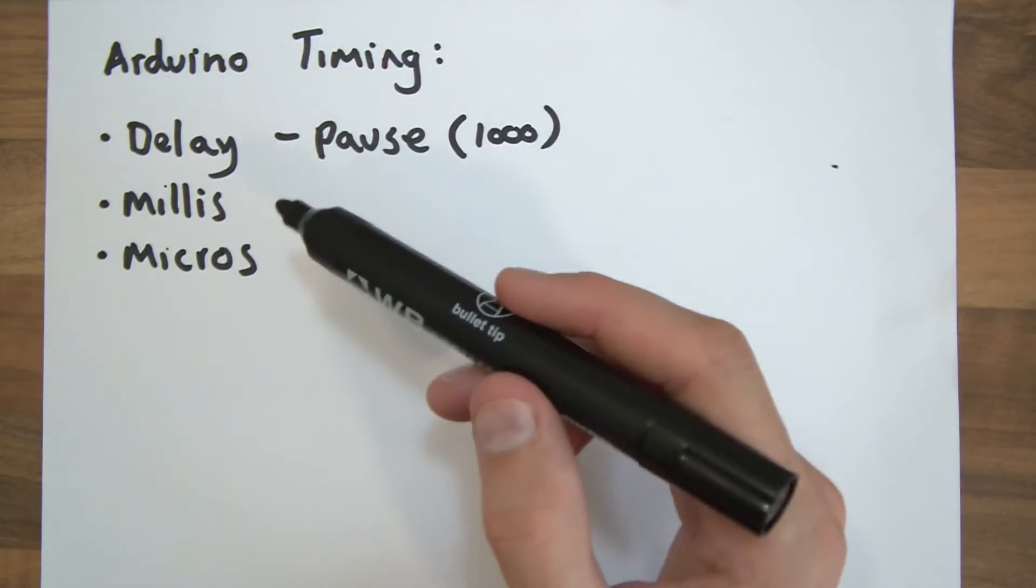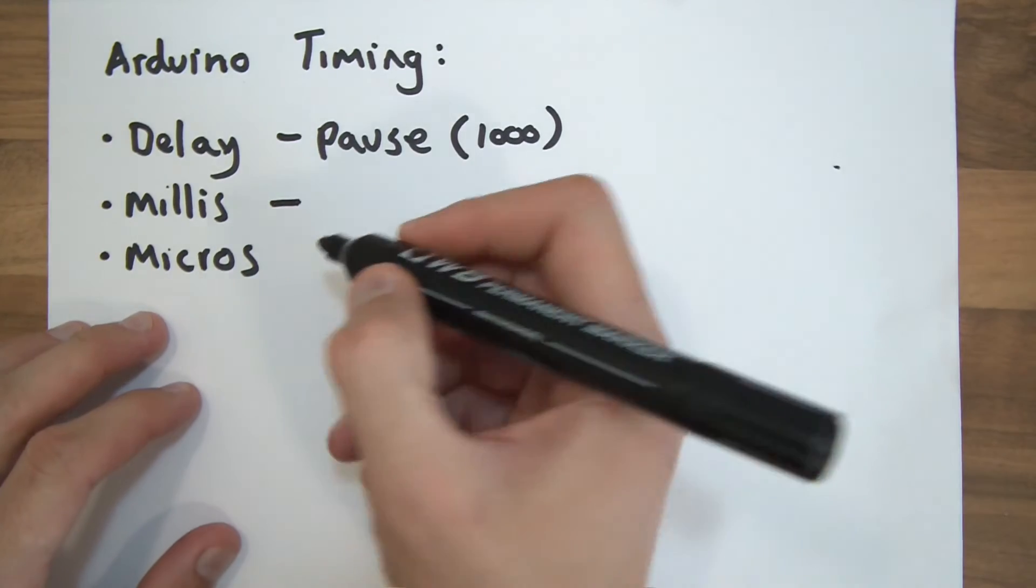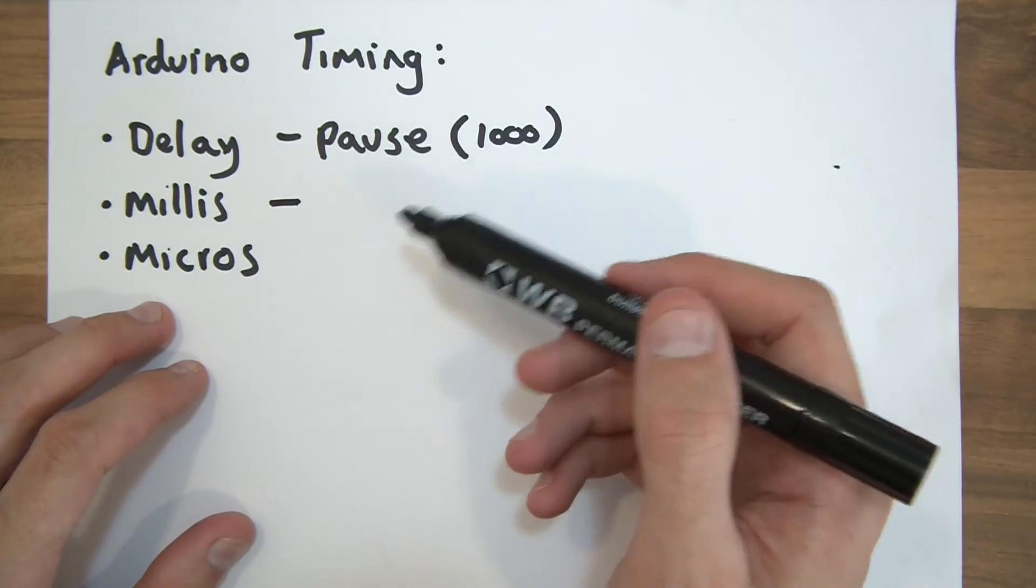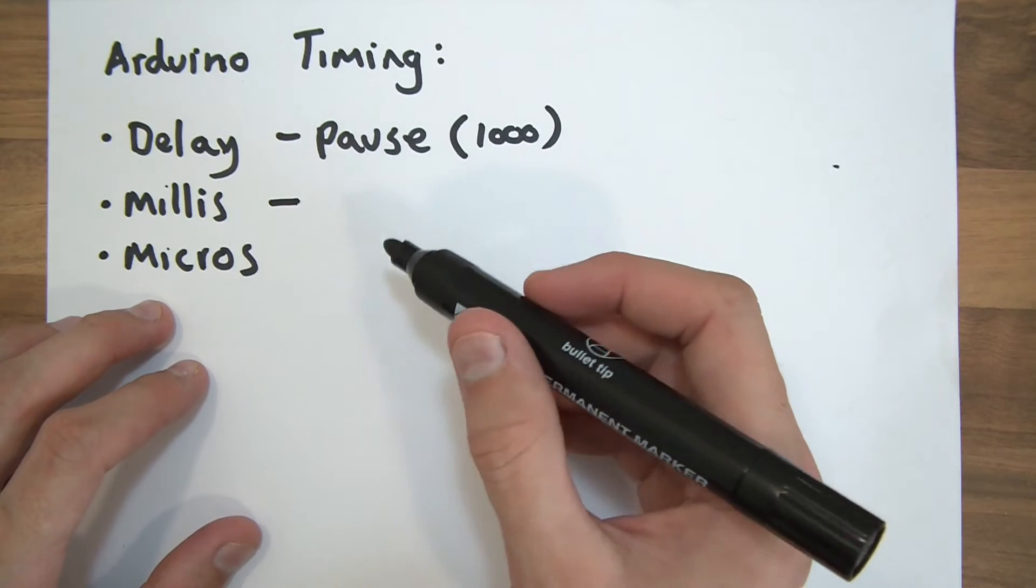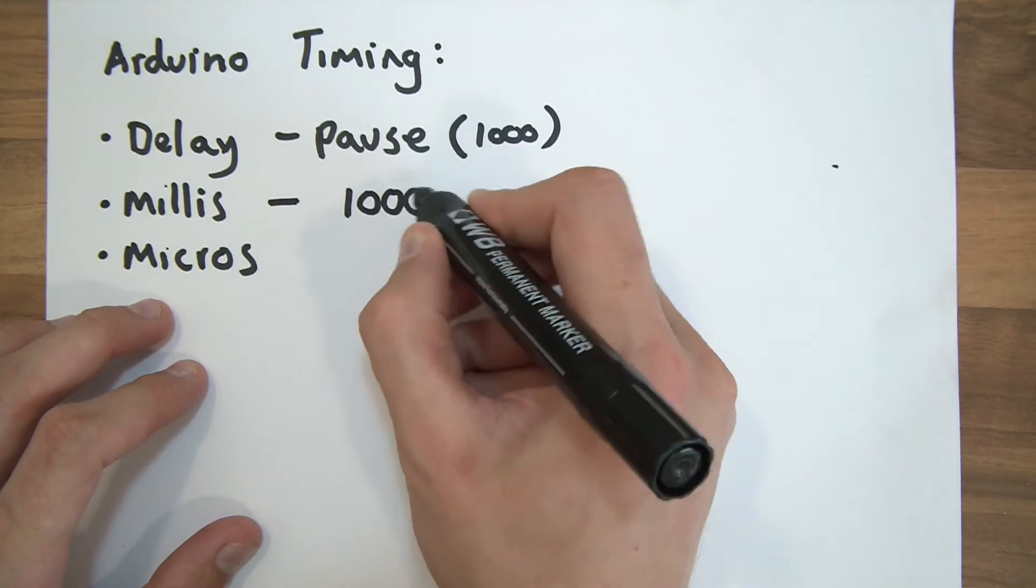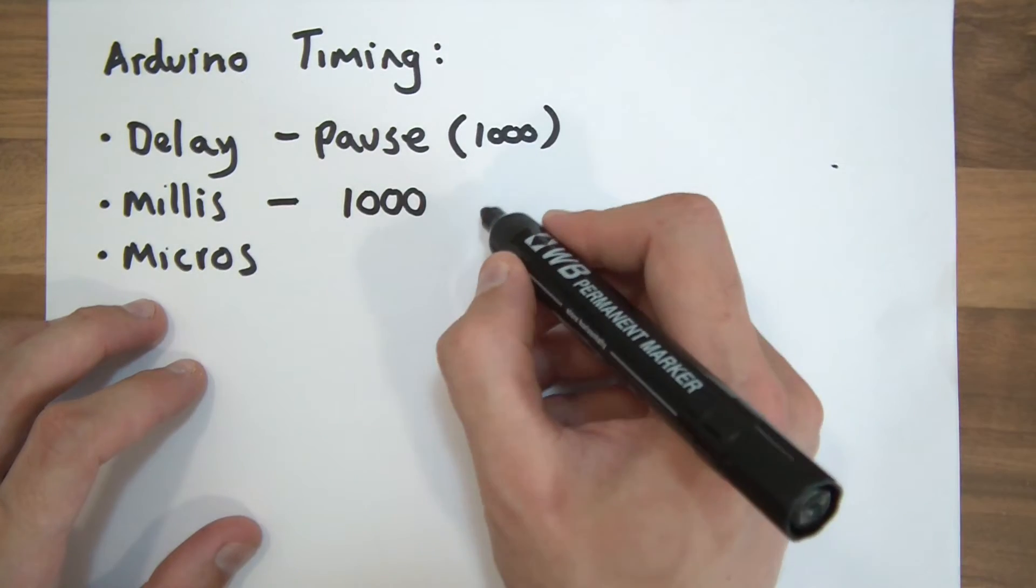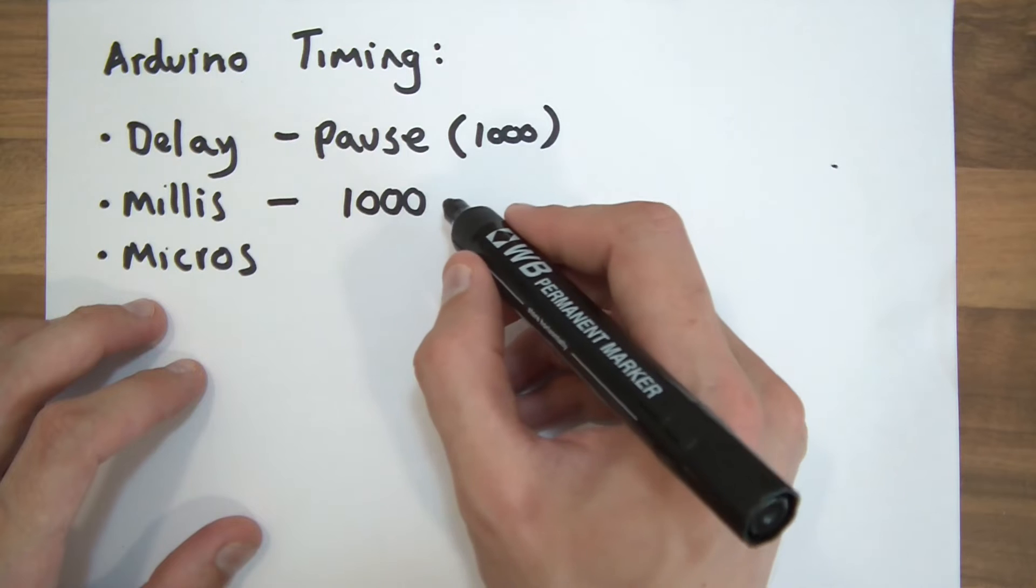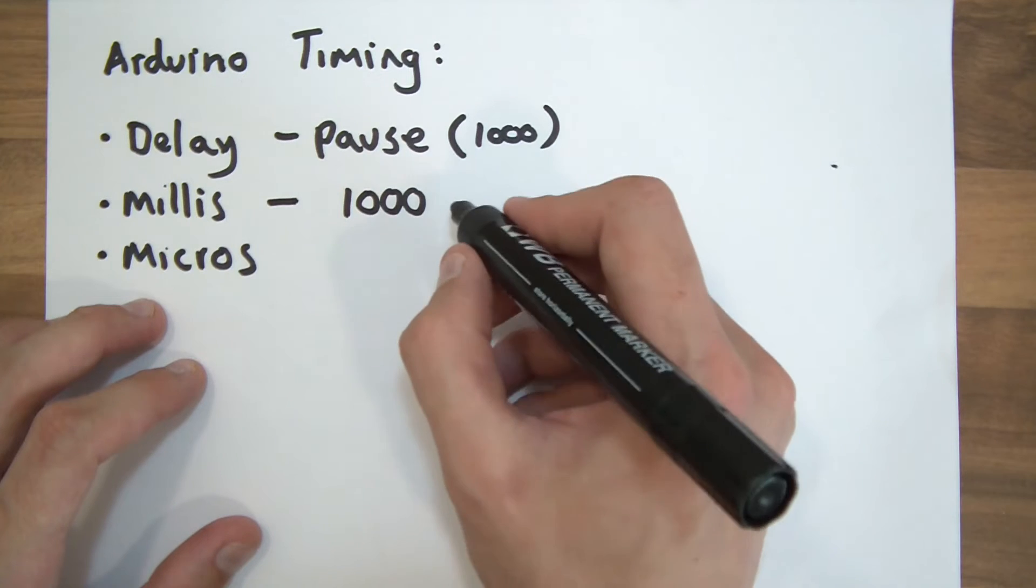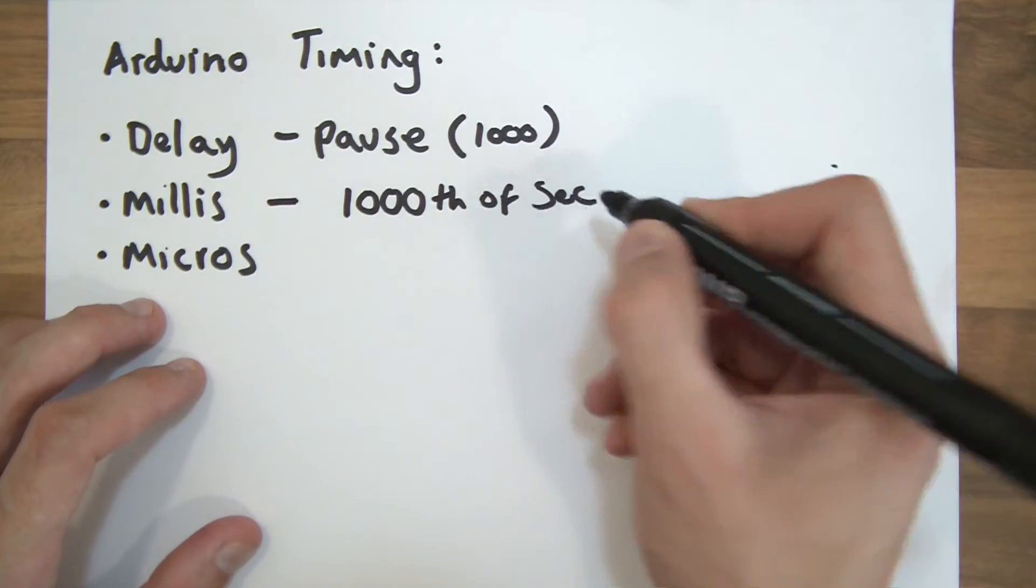So let's move on. So these two here, millis and micros, so what are these? Millis, this is from a Latin word, which is mille, and that means a thousand. So millis means a thousand, and basically it's thousandth of a second. So milliseconds, millis, milliseconds, a thousandth of a second.